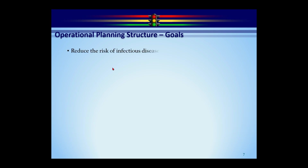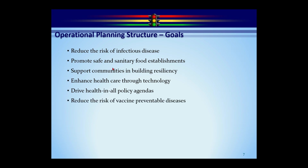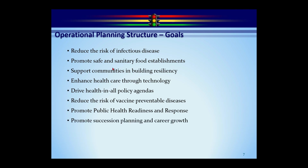Goals are the high-level definition of what we're trying to accomplish without a lot of detail. The most common structure is an action verb followed by a few words. Examples: Reduce the risk of infectious disease; Promote safe and sanitary food establishments; Support communities in building resiliency; Enhance health care through technology; Reduce the risk of vaccine-preventable diseases; Promote succession planning and career growth. For today: Reduce smoking in high schools. From goals, we know what we're trying to accomplish but not specifically which schools, by how much, or when — that detail comes at the objective level.